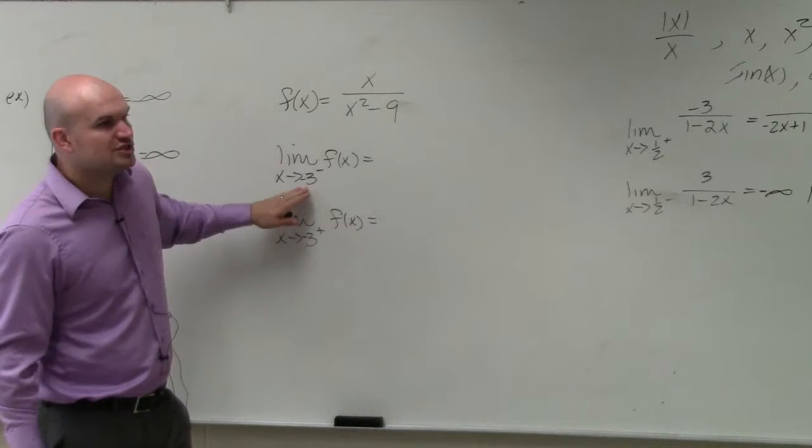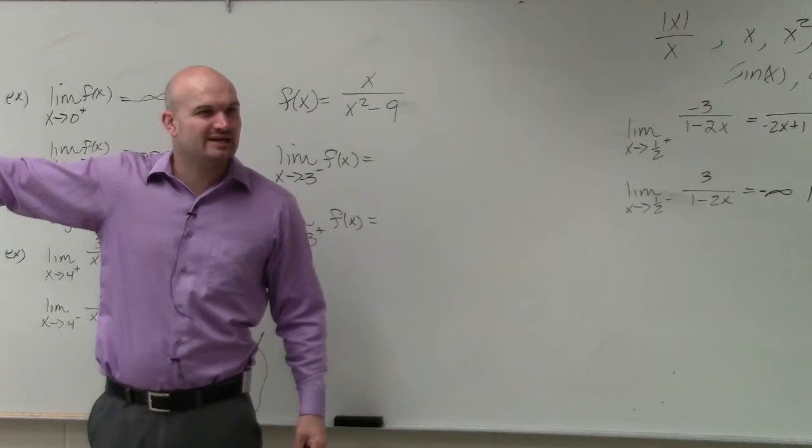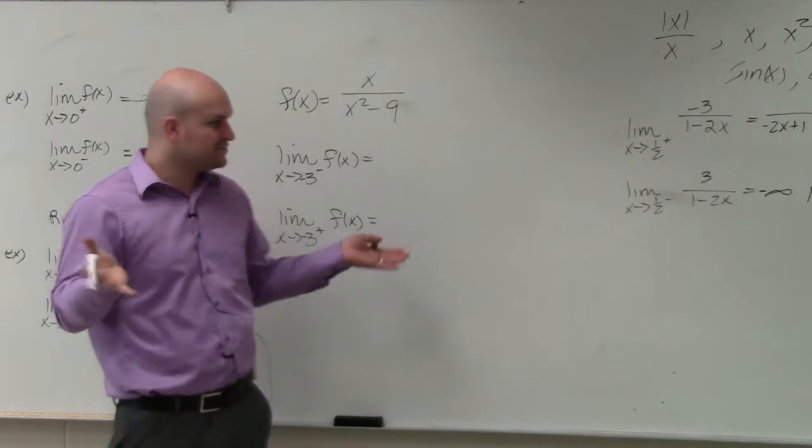What we can do is just choose smaller, smaller numbers that are really, really close. So rather than doing a whole table like we did, just pick one value that's really, really close.